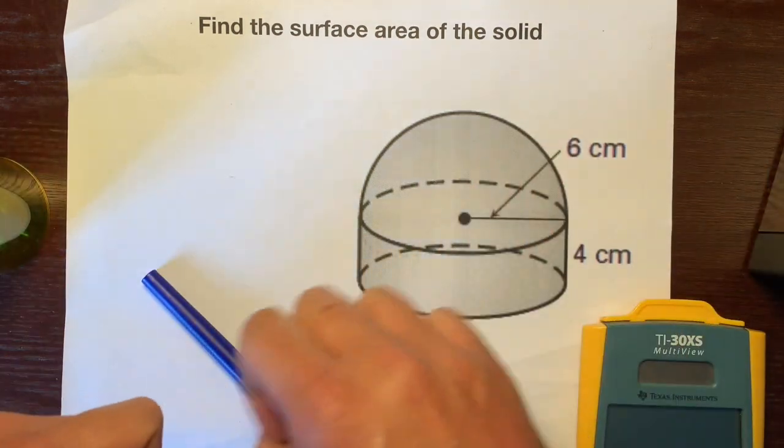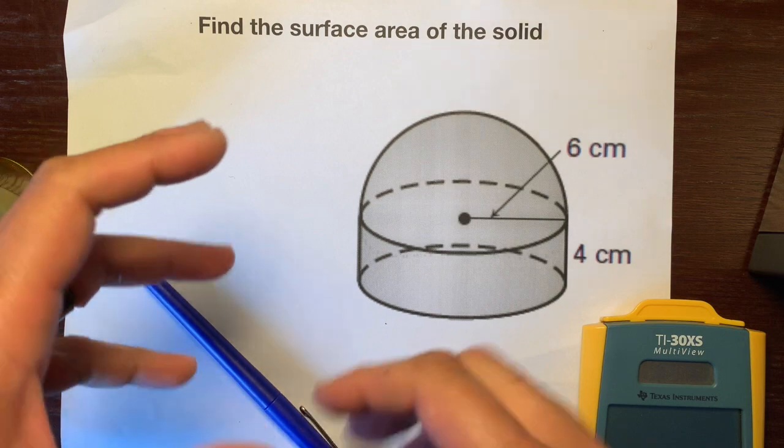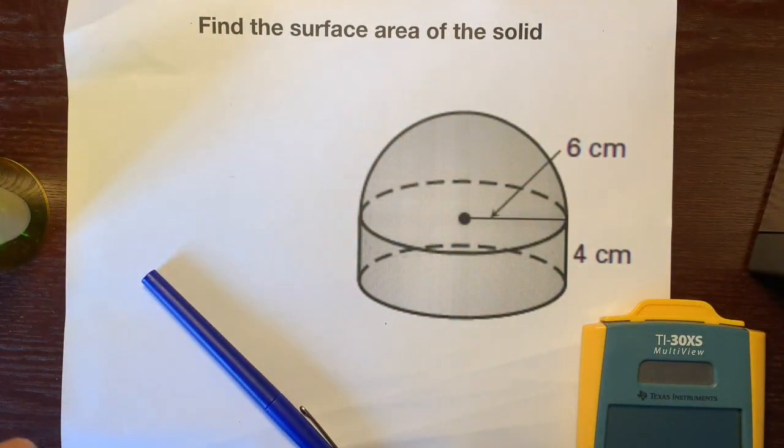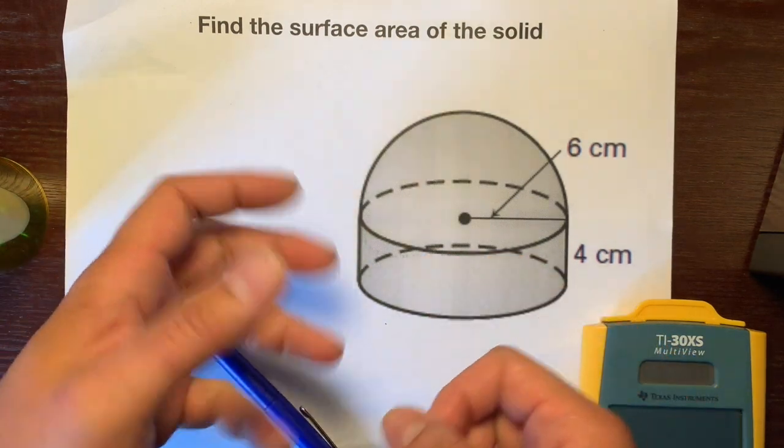A few things to remember. First thing is surface area. Surface area means how many squares fit on the surface. And we have two shapes, two solids that make up this composite solid,